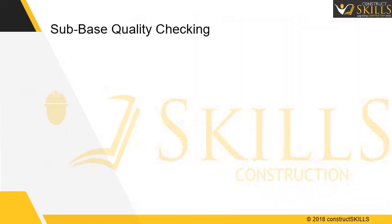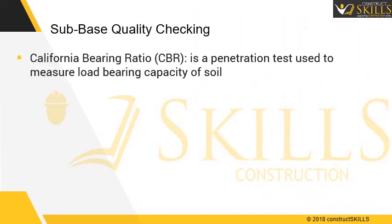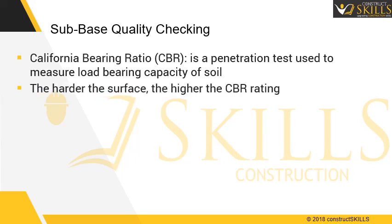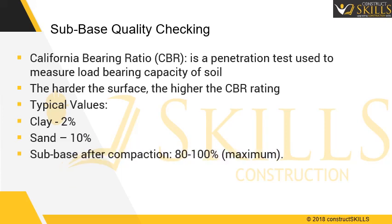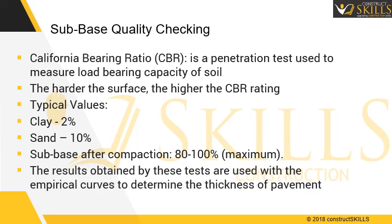Sub-base quality checking: California Bearing Ratio (CBR) is a penetration test used to measure the load-bearing capacity of soil. The harder the surface, the higher the CBR rating. Typical values — clay is 2%, sand is 10%, and sub-base after compaction is 80 to 100% maximum. The results obtained are used with empirical curves to determine the thickness of pavement.